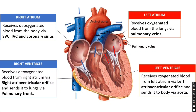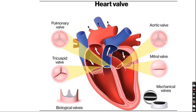On the left side, between the left atrium and left ventricle, the valve is called the bicuspid valve, otherwise known as the mitral valve. It has two cusps, which is why it is called bicuspid. You can see both the tricuspid and bicuspid valves in the diagram. From the pulmonary trunk, the valve is called the pulmonary valve, and the aortic valve guards the aorta. These are the four valves of the heart.